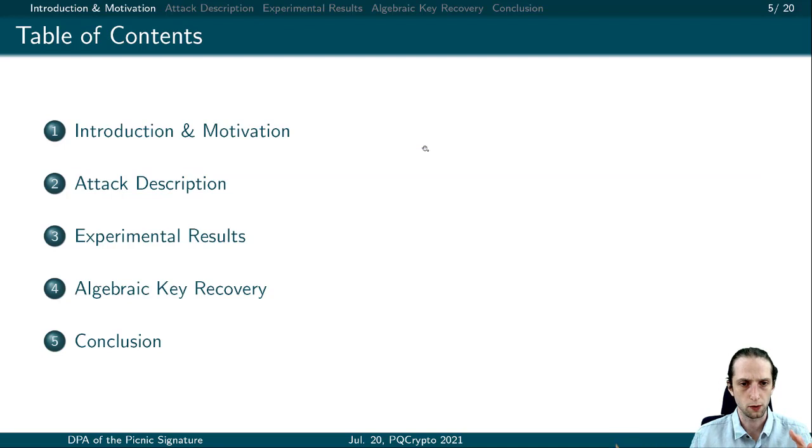What we are going to show in this presentation: first, we take a look at our motivation and give the basis of LowMC, which is the key component of Picnic, and ZK-Boo, which provides the zero-knowledge proof of Picnic signatures. We take a look at how these attacks work against ZK-Boo. Then we continue with the attack descriptions, followed by the practical setup and experimental results. Finally, we give the algebraic key recovery and conclude our presentation.